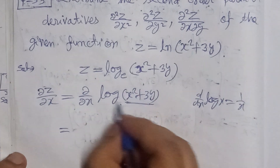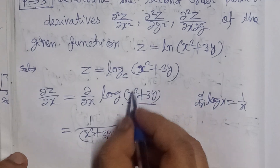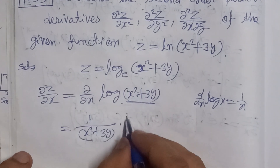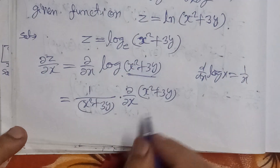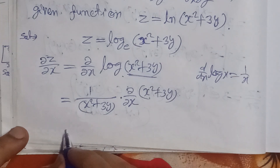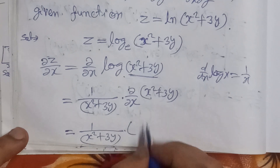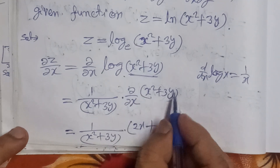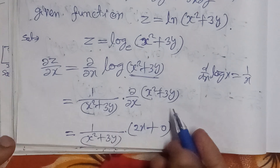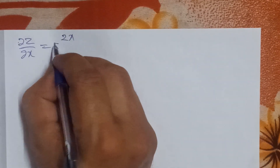The differentiation of log x is 1/x, so differentiation of ln(x² + 3y) gives 1/(x² + 3y) multiplied by the derivative of (x² + 3y) with respect to x. Differentiating term by term: differentiation of x² is 2x, and differentiation of 3y with respect to x is zero, since y is constant in partial differentiation. So we get del z/del x = 2x/(x² + 3y).